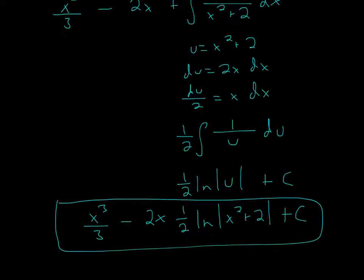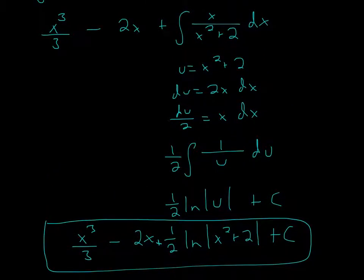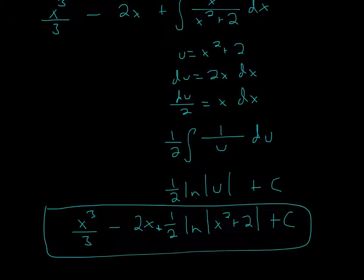Now the final thing is right here, there should be a positive sign, a plus sign. So that will be your final answer. Because you plug in u and it will be 1 half ln x squared plus 2 plus c. And then you have to remember to pull these down. So it's x cubed over 3 minus 2x plus all of this. So that's your final answer.